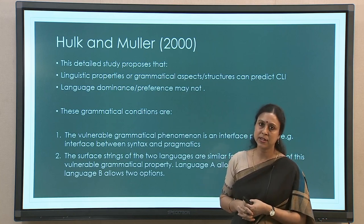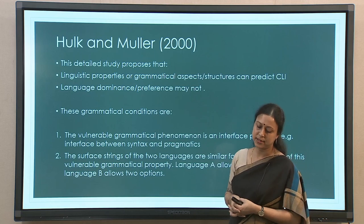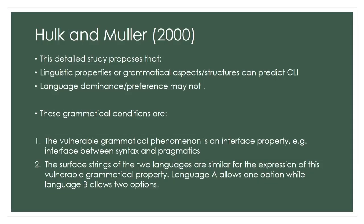In fact, simultaneous bilingualism does allow, as per Müller, separation of some grammatical aspects while keeping some domains open for influence. A very influential study in 2000 by Hulk and Müller makes a very important proposal: their detailed study proposes that linguistic properties and grammatical aspect structures can predict CLI. Basically, what are the grammatical properties between the two languages of the bilingual that decides whether you will find CLI or not? Language dominance or preference, they say, are probably not what is creating the influence or mixing we see — what it basically comes down to is the structure. They propose that a particular grammatical structure makes it open for CLI.